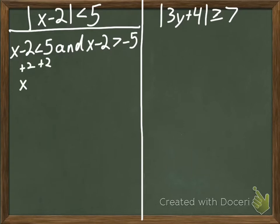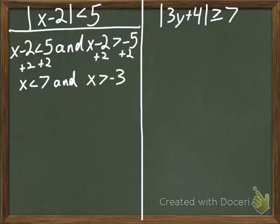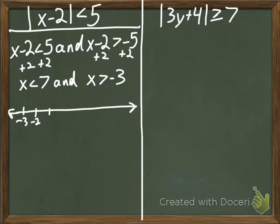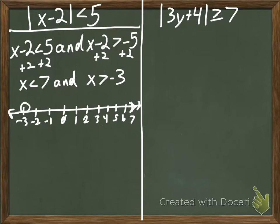We add 2. We get x is less than 7, and — add 2 — x is greater than negative 3. And then we graph. We shade in between, from negative 3 to 7.